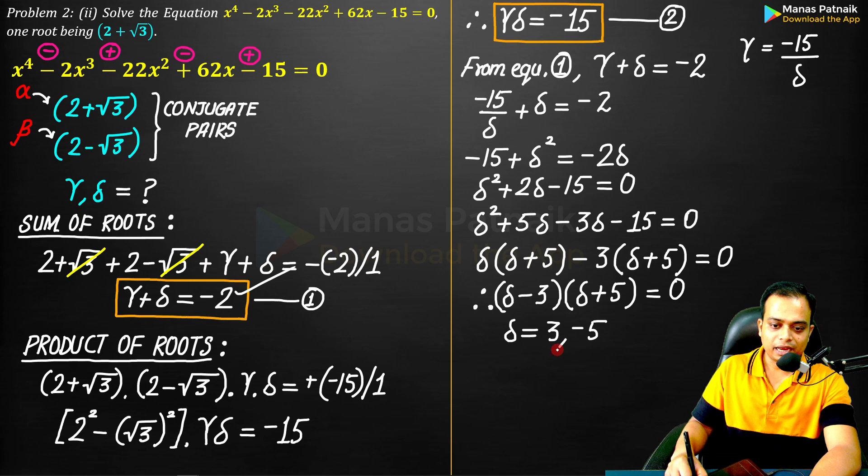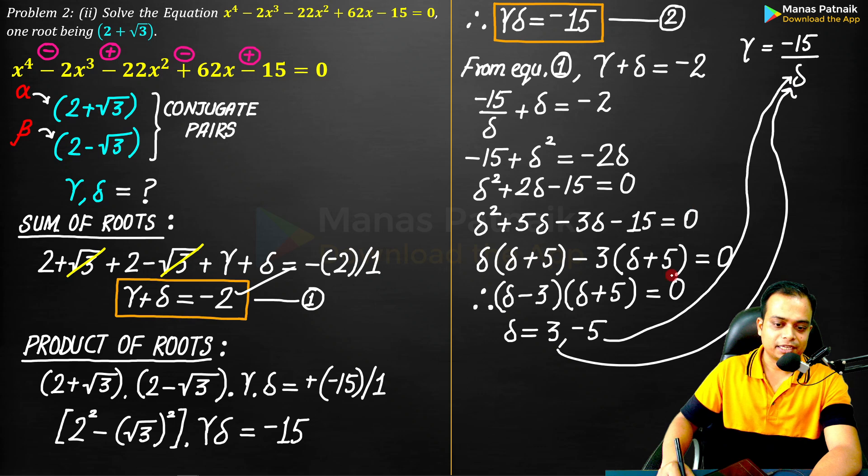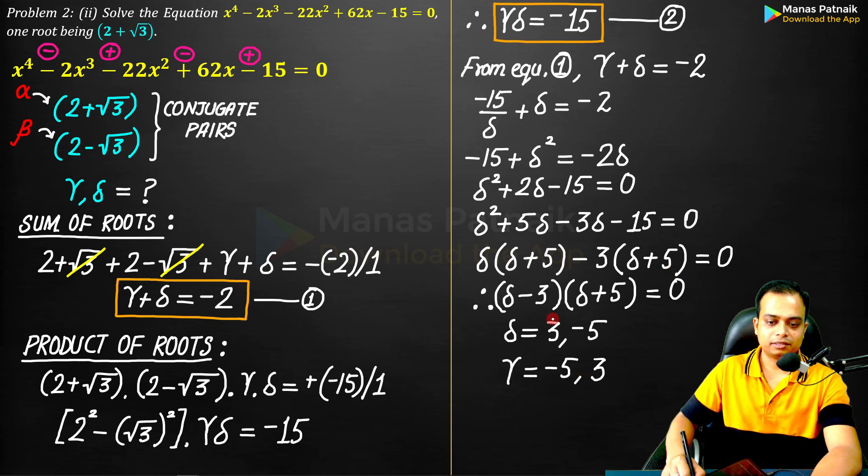And when you put this value of 3 here, you are going to get γ as -15/3. And when you put the value of δ as -5 here, you are going to get γ as positive 3. Let me do that. This is the result.